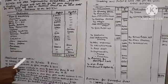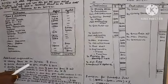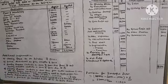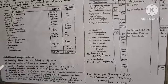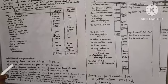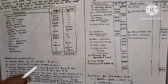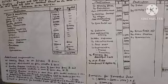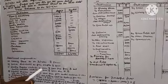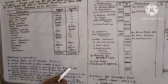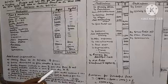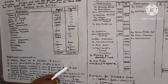Additional information: (A) Closing stock as on 31st December 2021 is Rs. 50,000. (B) Goods distributed as free sample Rs. 2,000. (C) Sundry debtors include a sum of Rs. 3,000 due from B, and sundry creditors include a sum of Rs. 2,000 due to B.